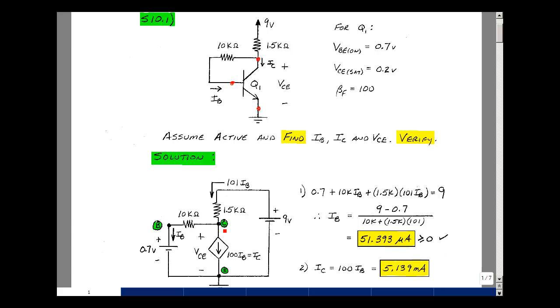My first step here is to write as many things down in the schematic as I can find. And since this current is 100 I sub B and this is equal to I sub B, well then this has to be 101 I sub B. I'm just doing Kirchhoff's current law, this collector.